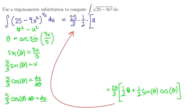1 half times theta which is the arcsine of 3x over 5 plus the sine of the arcsine of 3x over 5 plus the cosine of the arcsine of 3x over 5.